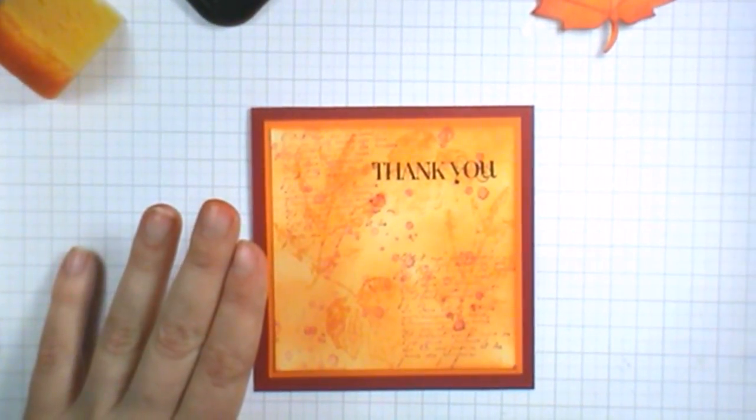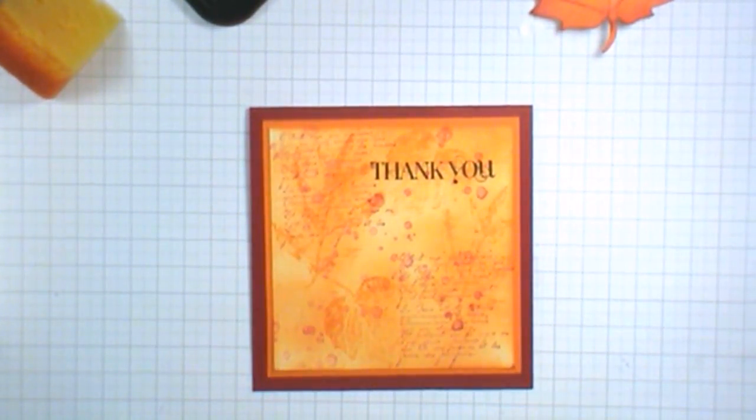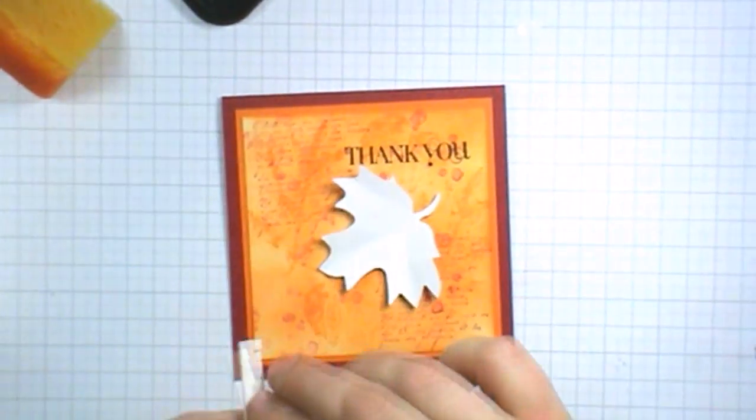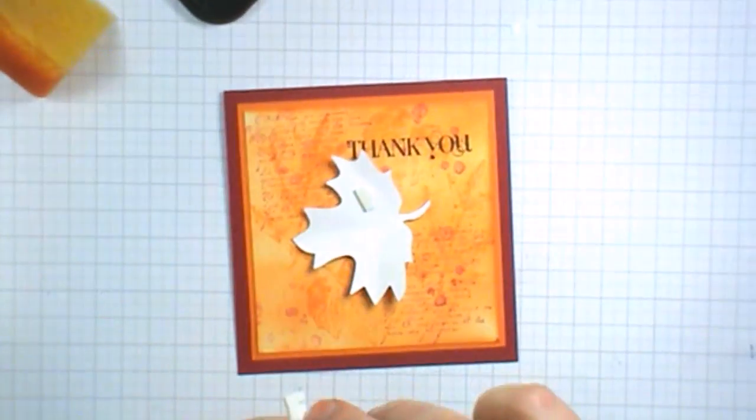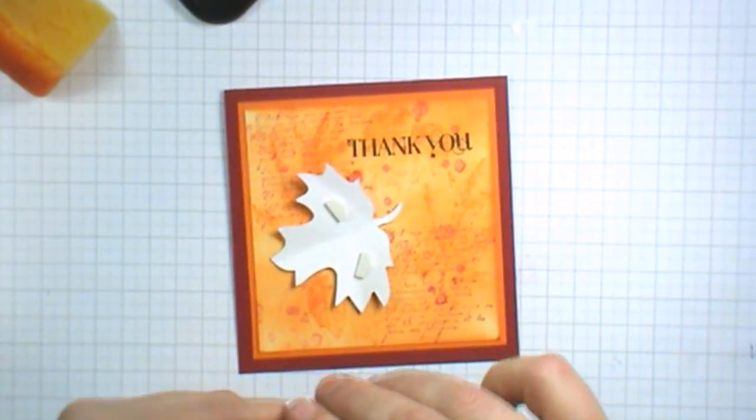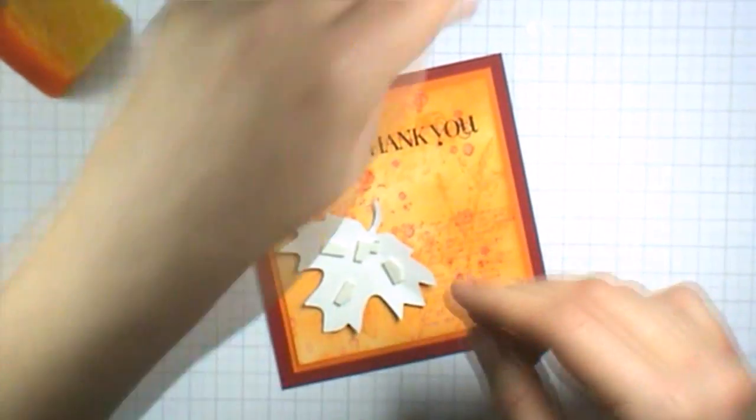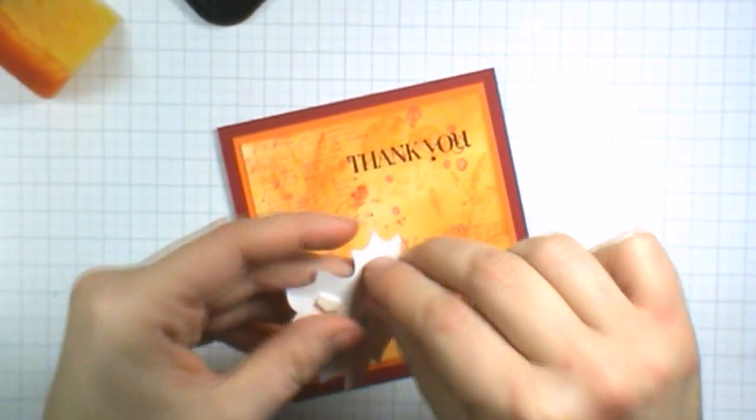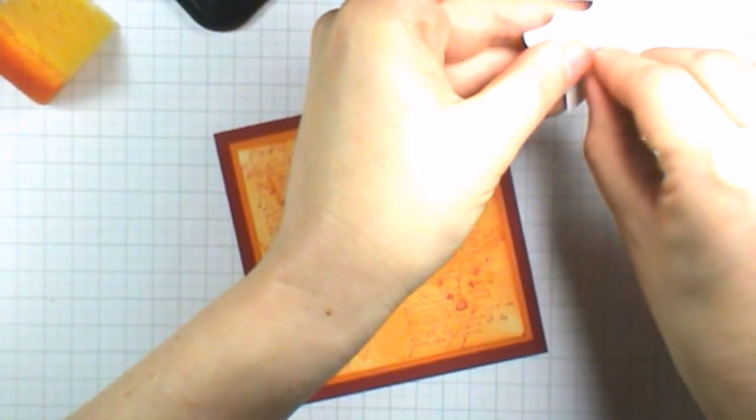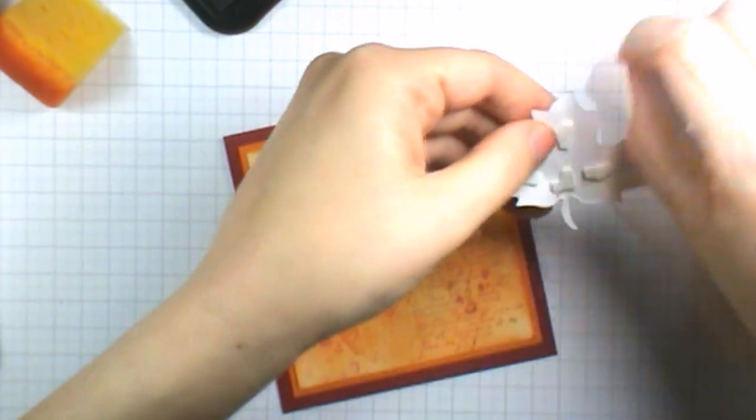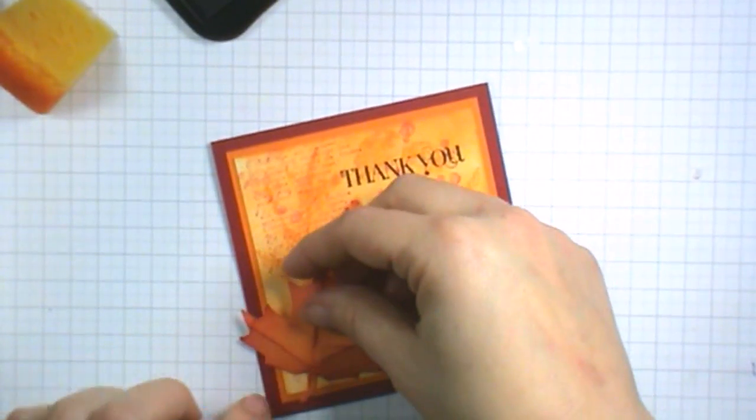Now we're going to take two dimensionals and cut them in half and place those onto the back of our maple leaf. Then we're just going to attach the maple leaf to the bottom left hand corner of our card.